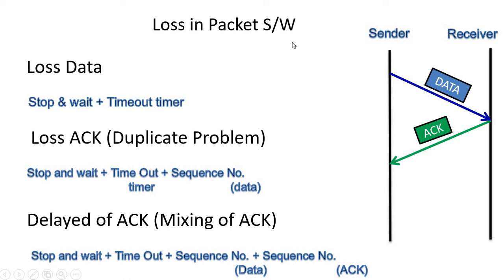The next topic is loss in a packet switch network. There are three types of losses: loss in data, loss in ACK (acknowledgement), and delayed ACK.